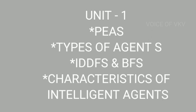In the first unit, there are 4 important questions: Performance, Environmental, Actuator and Sensor; Types of Agents; IDDFS and BFS; and Characteristics of Intelligent Agents. The types of agents cover 4 divisions: simple, reflex, model, utility, and goal-based. These are the 4 important topics in the first unit.